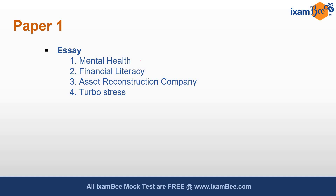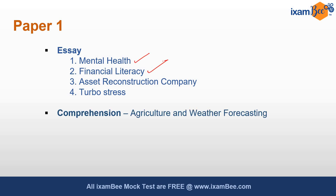In our descriptive English mock test, we had given about 20 essay topics, and two of those topics came in the exam — mental health and financial literacy. The comprehension topic was agriculture and weather forecasting. In the precis, the comprehension was related to food genetics, food technology along with nutrition, and advanced technology and how it is not that productive — something related to food technology and nutrition.